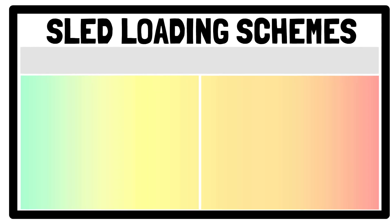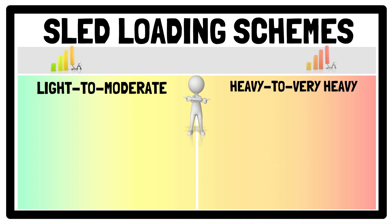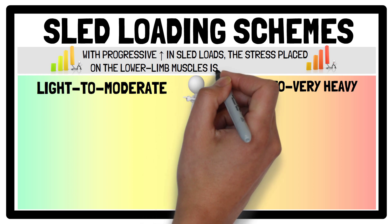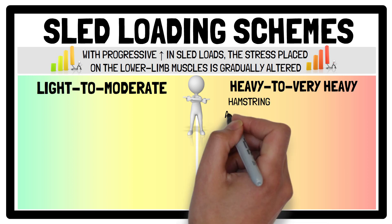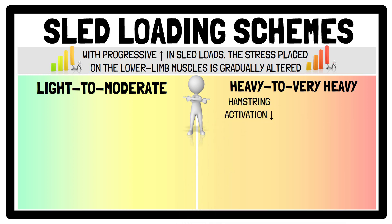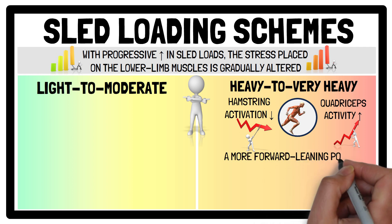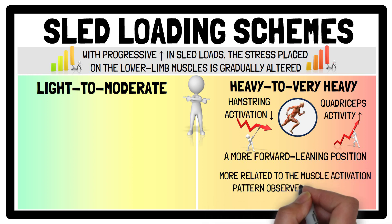Regarding sled loading schemes, because positive adaptations in acceleration or maximal velocity phases may be load specific, it's important to recognise that with the progressive increase in sled loads, the stress placed on lower limb muscles is gradually altered with respect to unresisted sprint performance. For example, hamstring activation is attenuated with heavy and very heavy sled loads, indicating that these strategies are not adequate to increase the specific performance of these muscles for maximum sprint efforts. Whereas quadriceps activity is increased with heavier sled loads; this, along with a more forward leaning position as a result of heavier sled loads, indicates that these stimuli may be more related to the muscle activation pattern observed during the initial acceleration phase of sprinting.